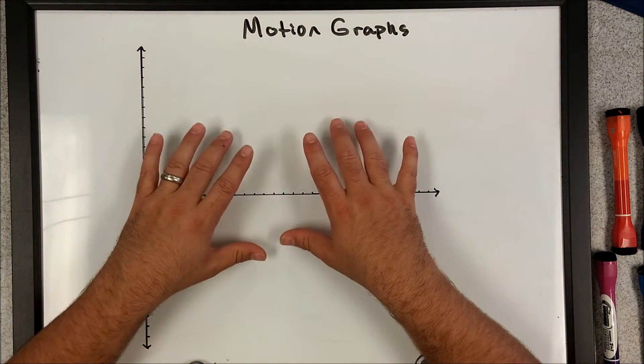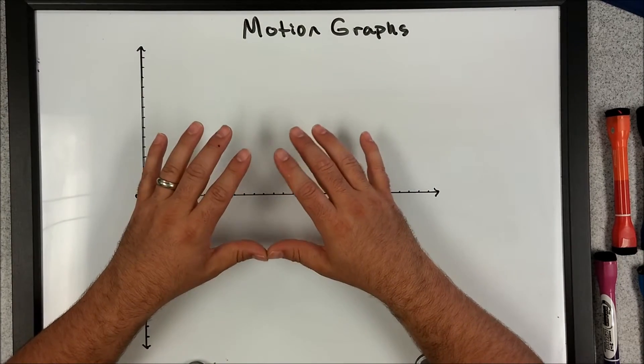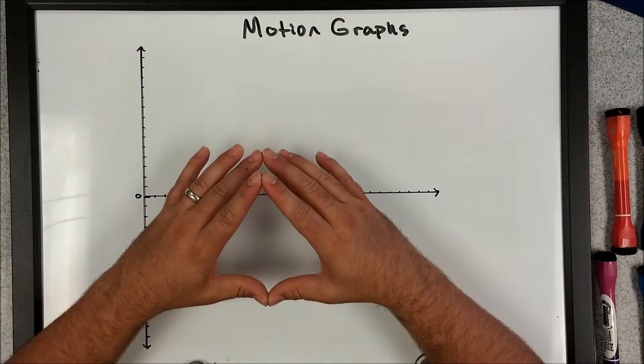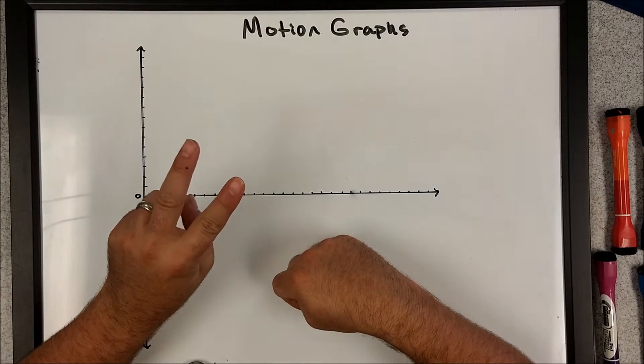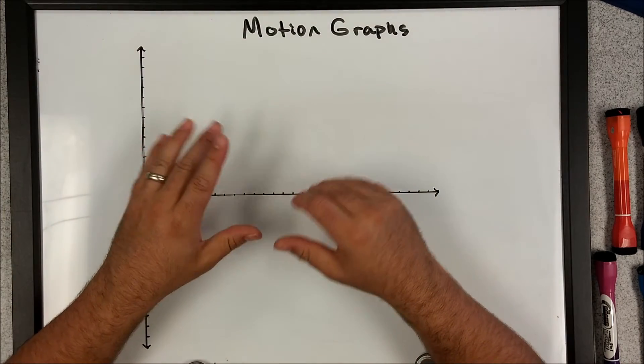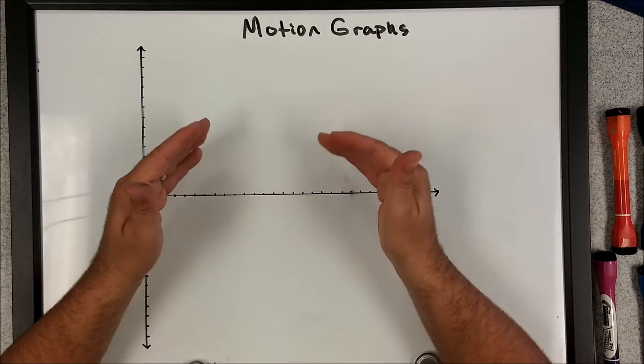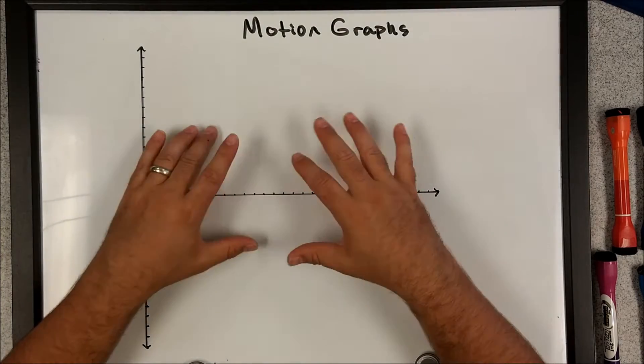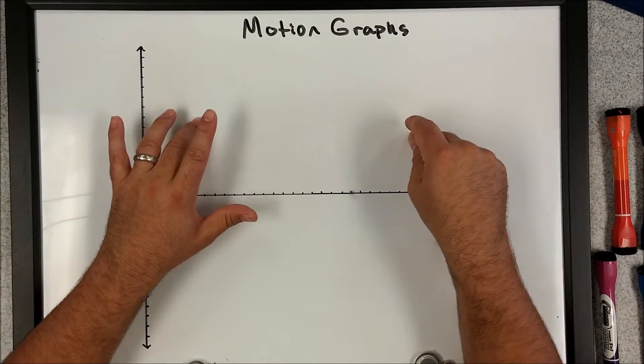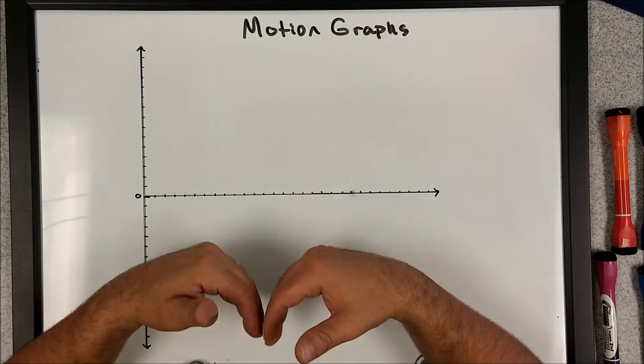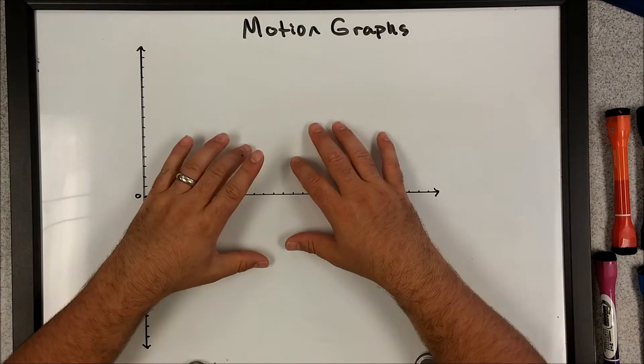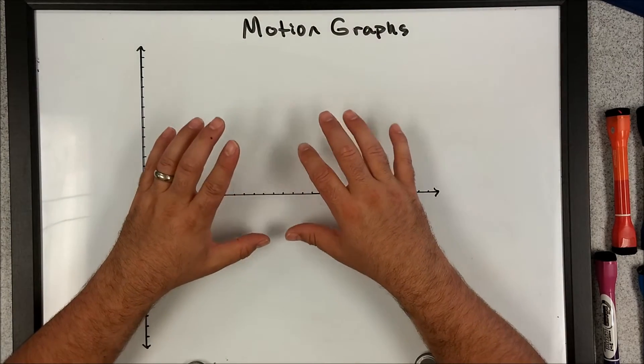So before I even talk about the different kinds of motion graphs, I do want to talk about two key terms that you will be having to analyze for most graphs, and that's going to be your slope, and it's also the area underneath the slope. Those two things, slope and area underneath the slope, are very important to analyze when dealing with any graphs in physics, and I will constantly be reminding you of that over these next few lessons.